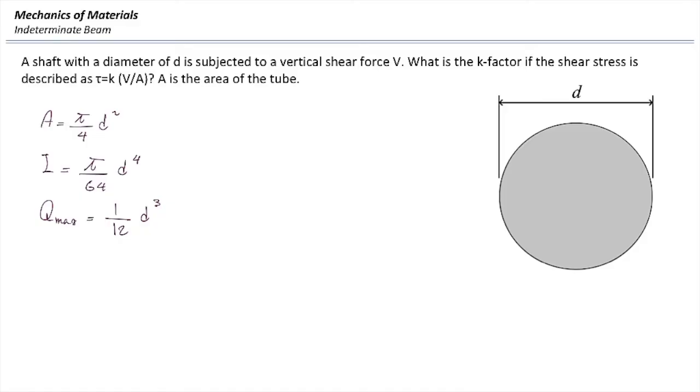All right, now I'm going to plug that back into the stress equation, VQ over IT. I'm just going to plug V here. Q is 1 over 12 diameter cubed. Moment of inertia is pi over 64 diameter to the 4th.